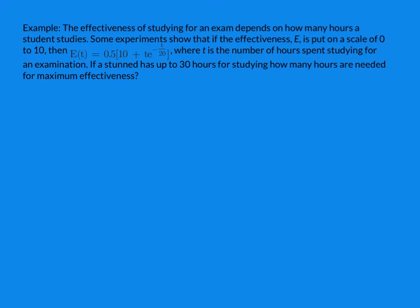So the effectiveness of studying for an exam depends on the hours the student studies for. They've done some experiments and they've come up with a model that puts the effectiveness E on a scale from 0 to 10, where T is the number of hours spent studying. If a student has up to 30 hours for studying, how many hours are needed for maximum effectiveness? So we can see this is an optimization question because it's asking us for a maximum. So we're going to be able to apply our understanding of optimization to this question.